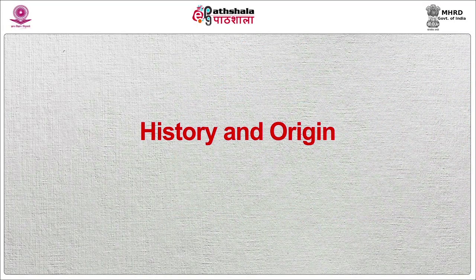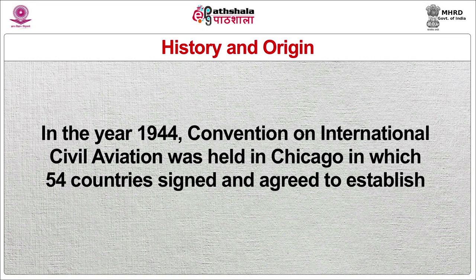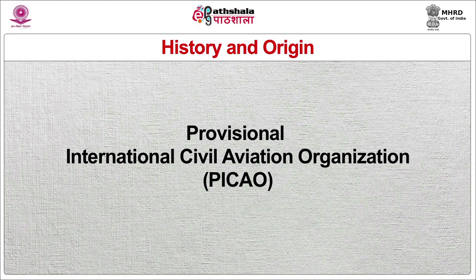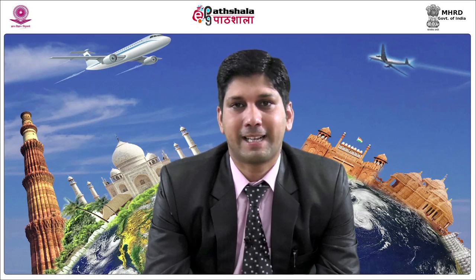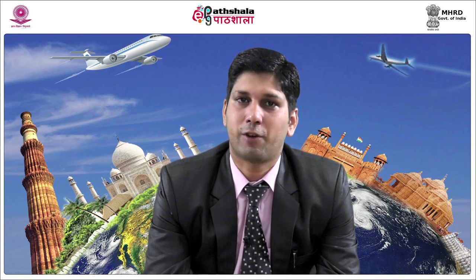ICAO was formerly established as the International Commission for Air Navigation, ICAN, which was established in 1903. ICAN continued to function until the end of 1945. In the year 1944, the Convention on International Civil Aviation was held in Chicago, in which 54 countries signed and agreed to establish the Provisional International Civil Aviation Organization, PICAO. As per the agreement, PICAO began operating on 6 June 1945, replacing ICAN. In the year 1947, ICAO became a permanent agency of the United Nations.